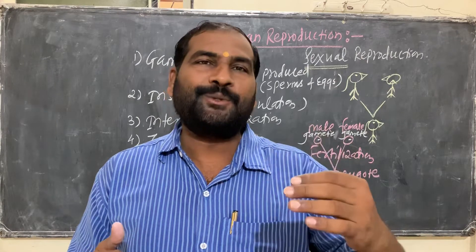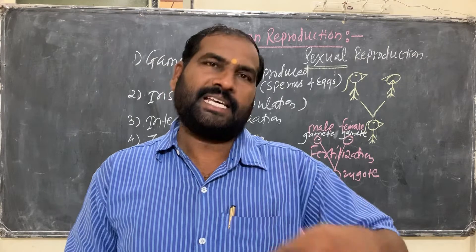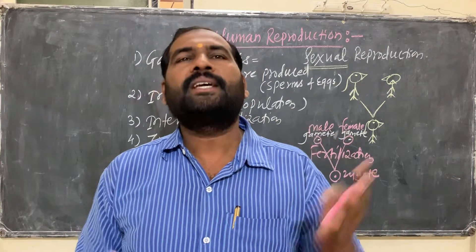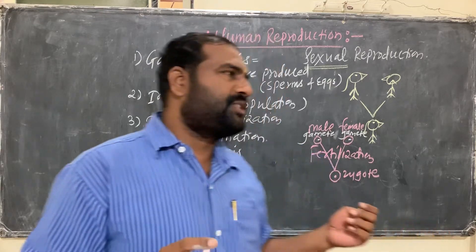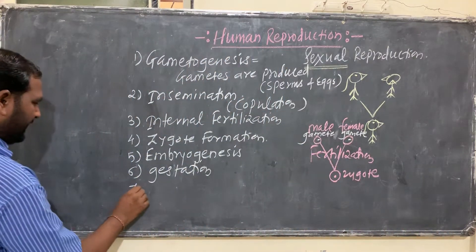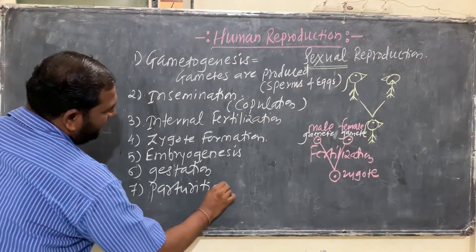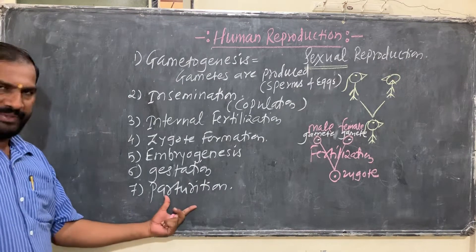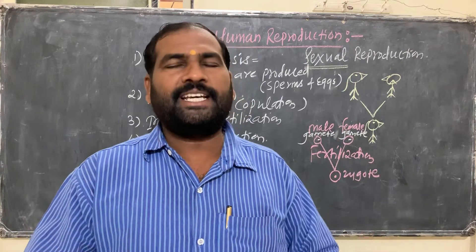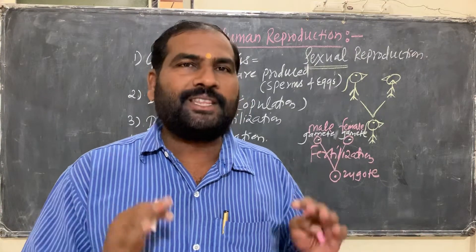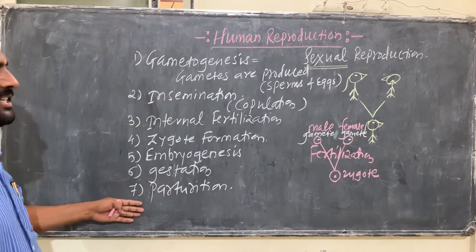The last event in sexual reproduction of the human being is parturition. Parturition means the delivery of the baby — the baby comes out through the body of the female and takes birth. The birth of a baby is called parturition.